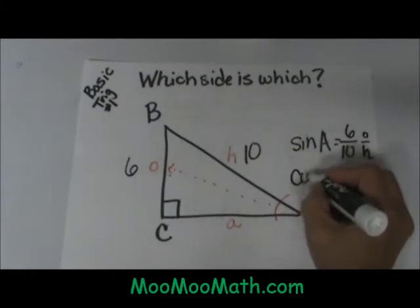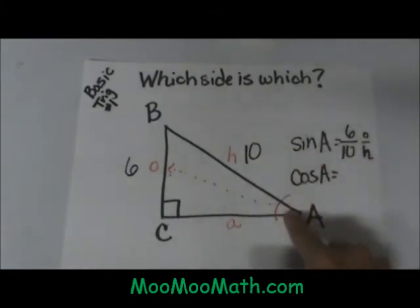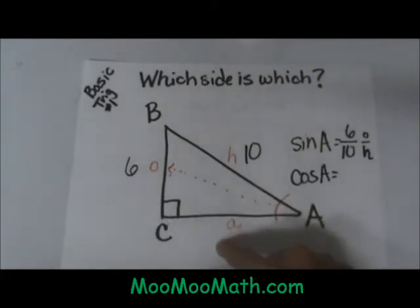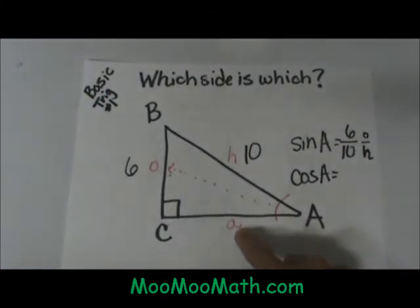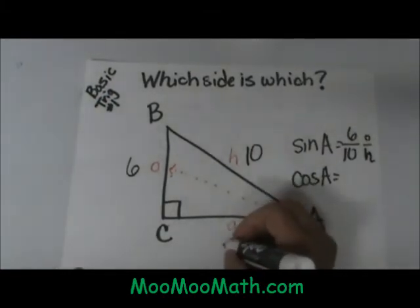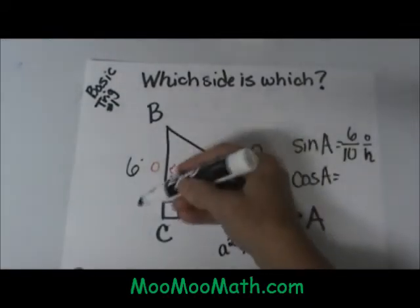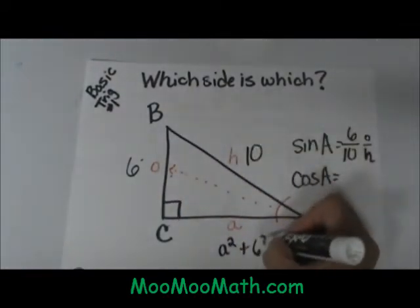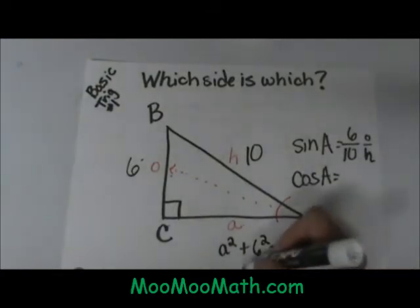Now let's look at the cosine of A. The cosine is the ratio adjacent over hypotenuse. I don't know this side so I can use the Pythagorean theorem to find that side. So I take A squared plus B squared, and B is my other leg which is 6 squared, equals C squared which is 10 squared.